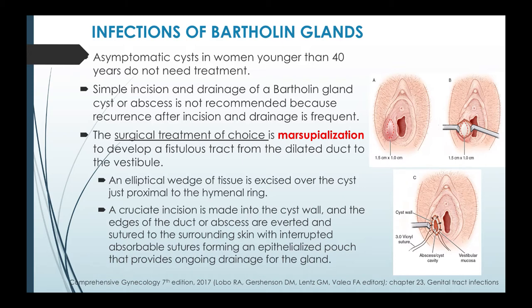Simple incision and drainage of a Bartholin gland cyst or abscess is not recommended because recurrence after I&D is very frequent. The surgical treatment of choice is marsupialization, which develops a fistulous tract from the dilated duct to the vestibule. An elliptical wedge of tissue is excised over the cyst just proximal to the hymenal ring. A cruciate incision is made into the cyst wall and the edges of the duct or abscess are everted and sutured to the surrounding skin with interrupted absorbable sutures, usually chromic, forming an epithelialized pouch that provides ongoing drainage for the gland.